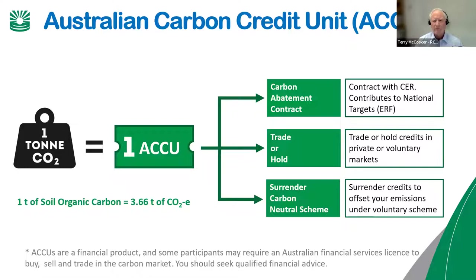Once you've got carbon credit units, they go into what's called an ANREU account — a special account where every carbon credit has an electronic signature indicating whether it's a soil carbon project, a forestry project, or some other form of abatement, along with all the details around that credit.